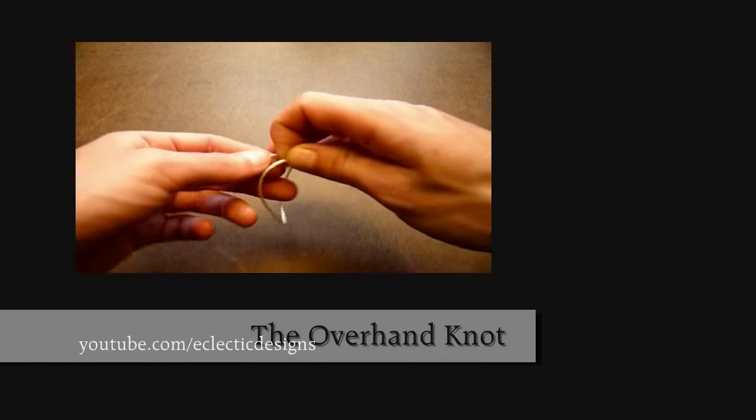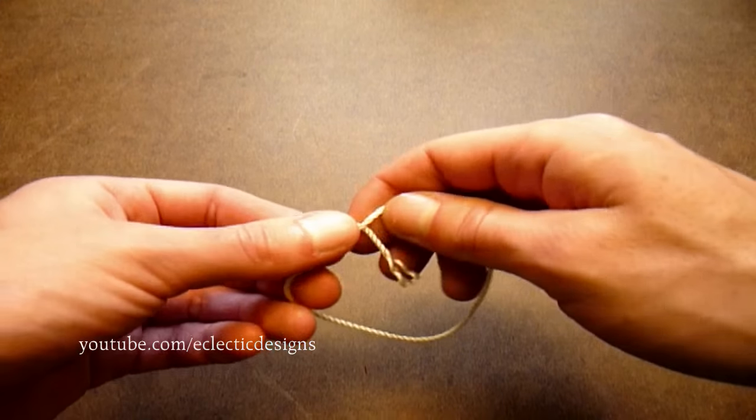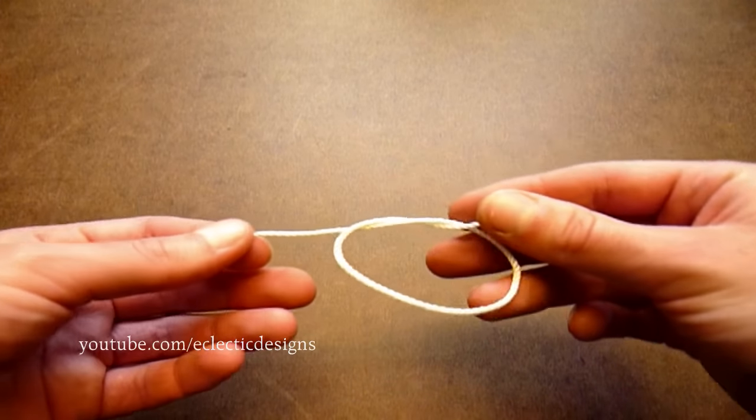The overhand knot. Make a loop then pass one end of the string through the loop. Pull both ends to tighten.